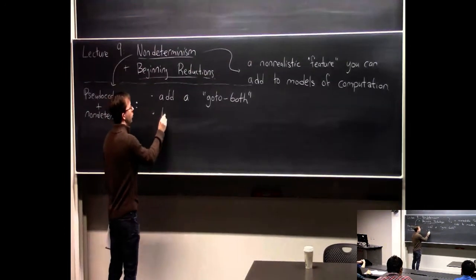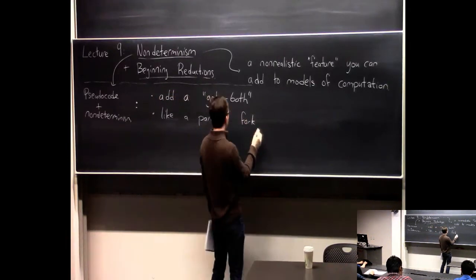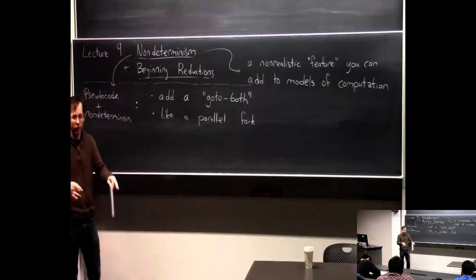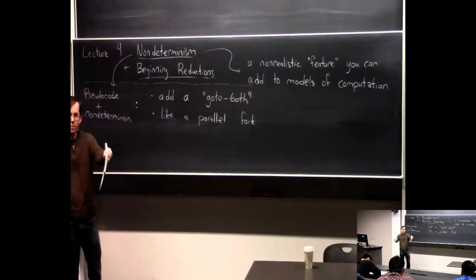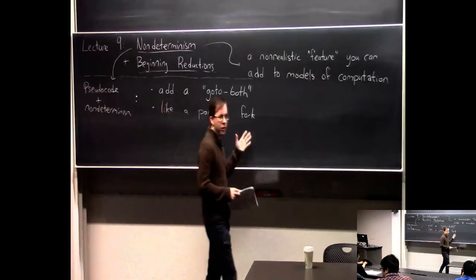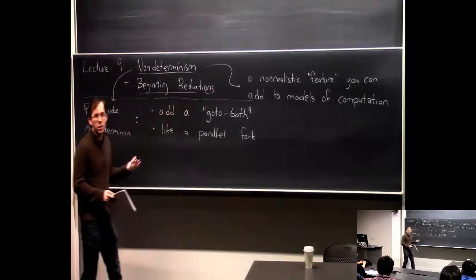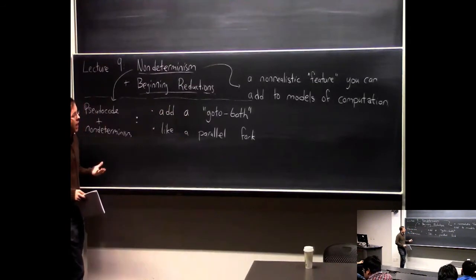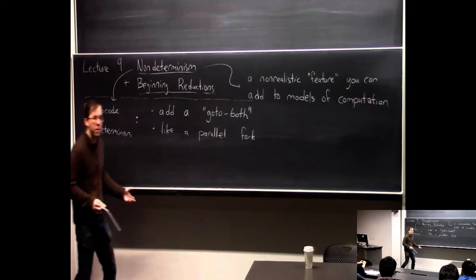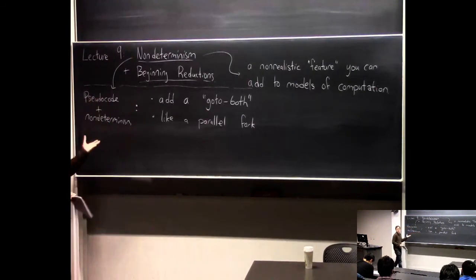You can think of 'go to both' kind of like a parallel fork. When it says go to line six and also go to line seven, you just imagine that there are parallel processes that start doing both of these things. Those processes themselves, if they hit another 'go to both' instruction, will fork into two copies, and so on. This is non-realistic — it's realistic to have some parallel forks, but in non-determinism you can do it as many times as you want. If you have 100 'go to both' instructions, suddenly you have 2 to the power of 100 parallel processes, which is physically impossible.